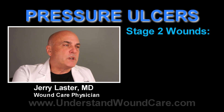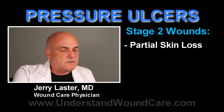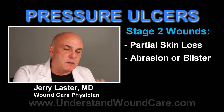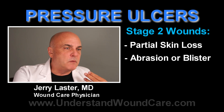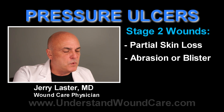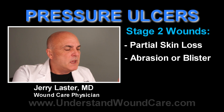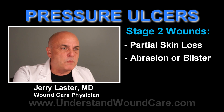A Stage 2 ulcer is a very partial injury into the skin. The skin has various thickness throughout the body — it can be very thin in places like the inner thigh or on your face, and very thick on your back. A Stage 2 wound is not measured in millimeters of depth; it's actually whether it's all the way through the dermis. If it's not all the way through the dermis, then it's a Stage 2 wound.